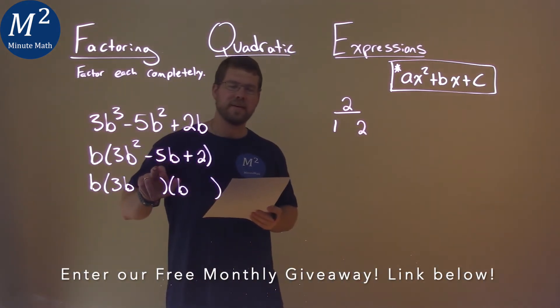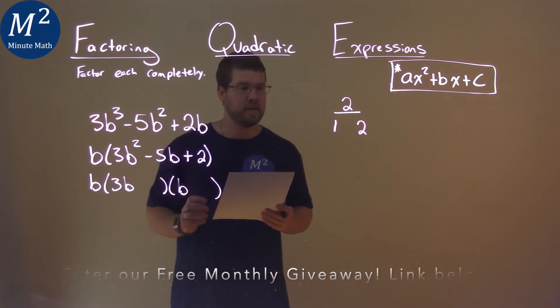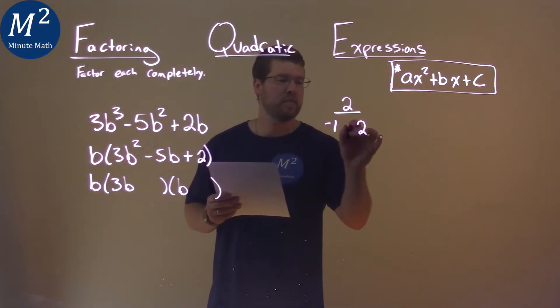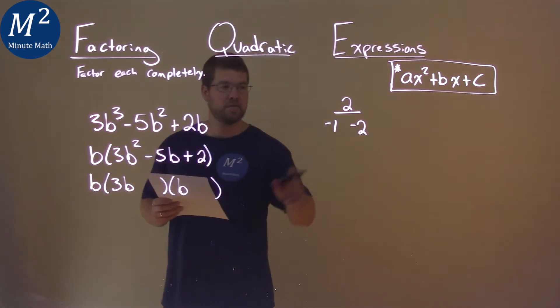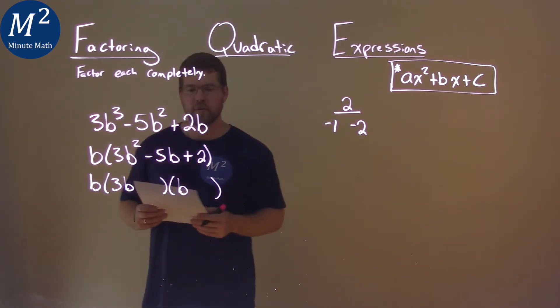Now, we know since our b value here is a negative number, that both of these numbers will have to be negative to get us that positive 2, but a negative b value.